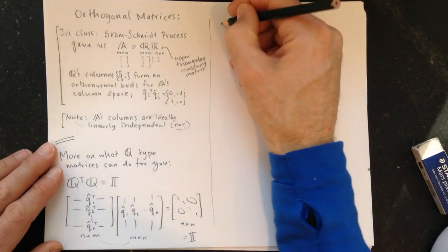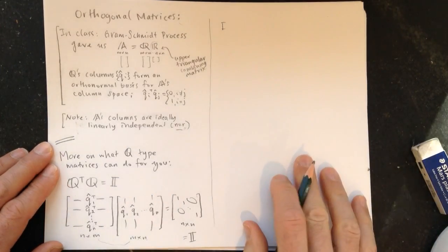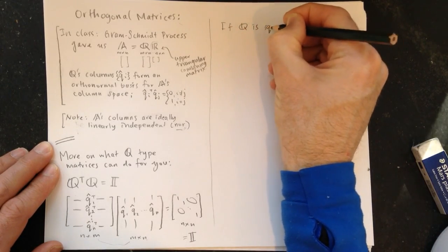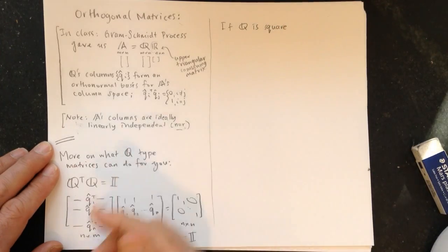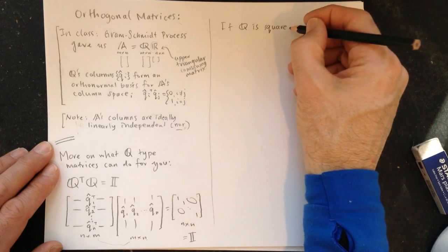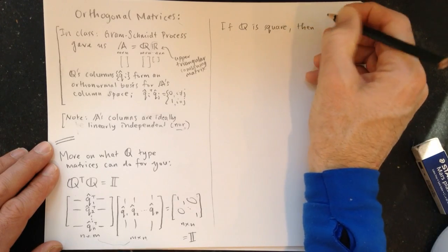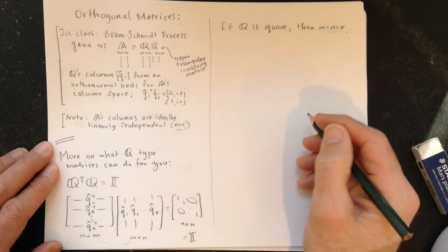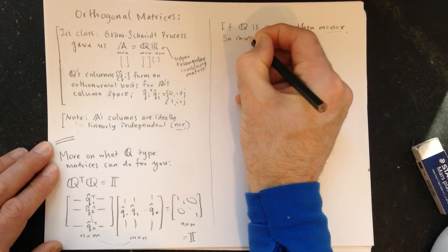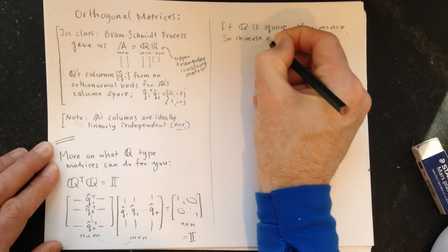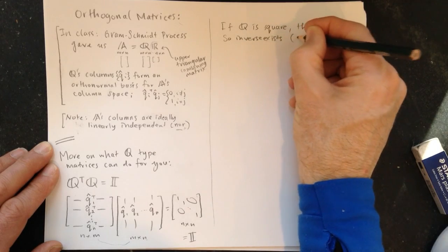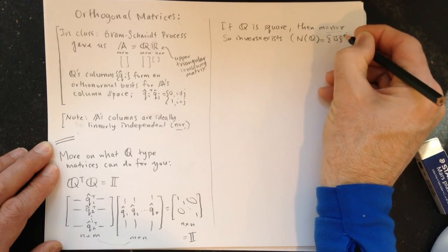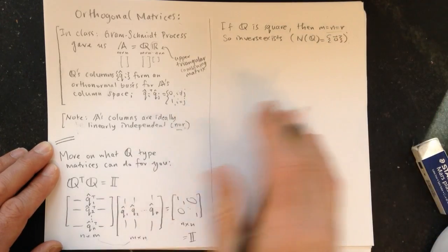Now, if, so here's sort of the big extra thing, if Q is square, and it has this property that the column vectors are orthonormal, then we have m equals n equals r, so it's full rank, so an inverse exists. And we have lots of ways of thinking about this now, for example, the null space of Q should relish this, it's just the zero vector.